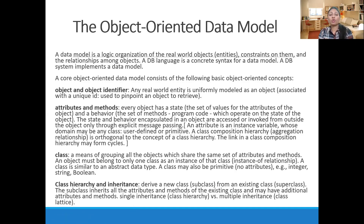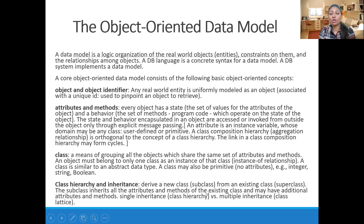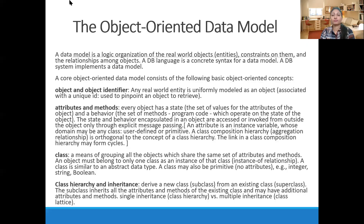Now, what is class hierarchy and inheritance? In the object-oriented data model, the most prominent feature of OOP — inheritance or reusability — is also used. We can derive a new class, or subclass, from an existing superclass. In C++, these are called base class and derived class. The subclass inherits all the attributes and methods of the existing class and may have additional attributes and methods. Single inheritance is called class hierarchy, and multiple inheritance is called class lattice.